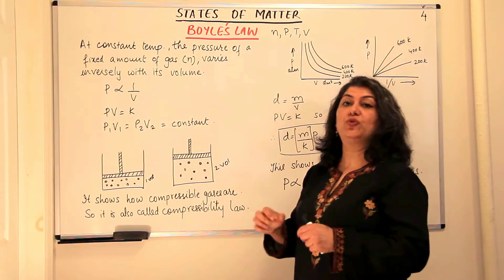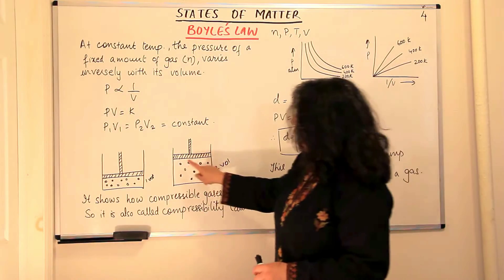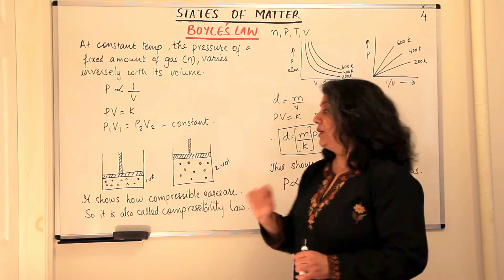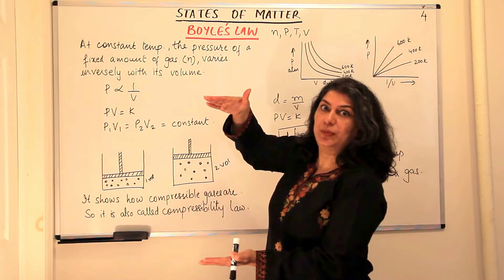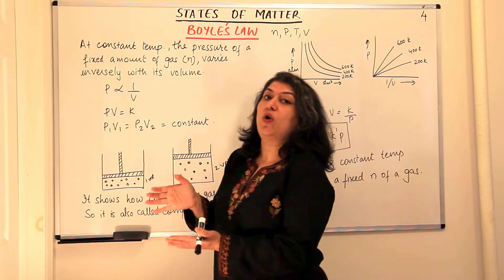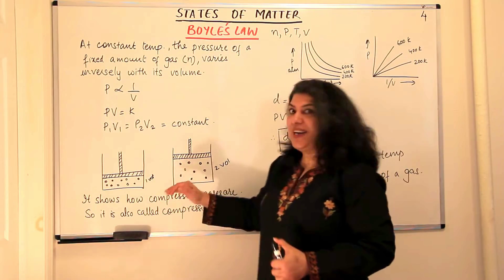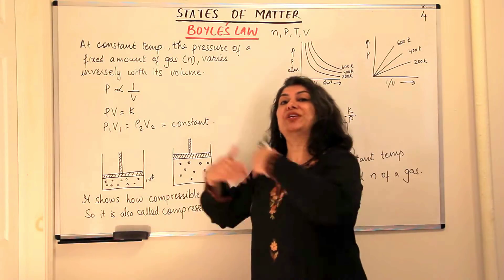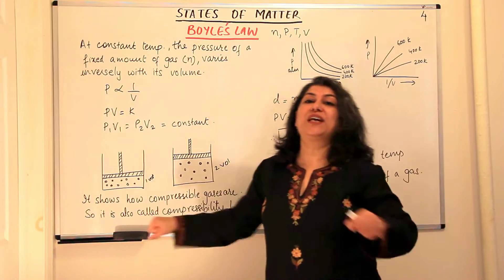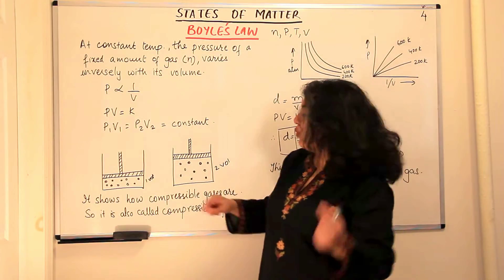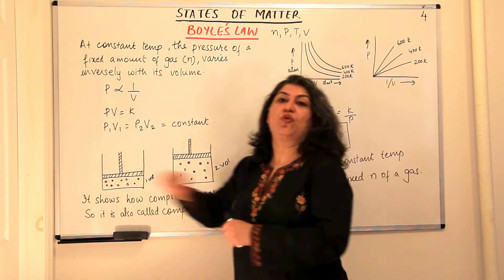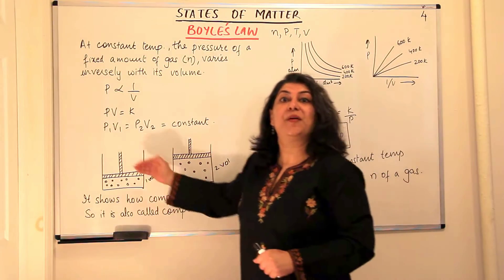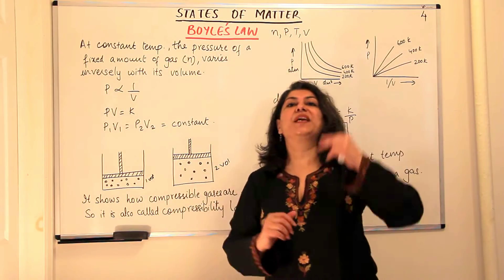The pressure of a gas is the number of molecules hitting the walls of the container. Say there are ten molecules occupying twice the volume; when we push the piston down, the same ten molecules now occupy half the space. The number of times the molecules hit the walls would double — so when we decrease the volume to half, the pressure becomes double.